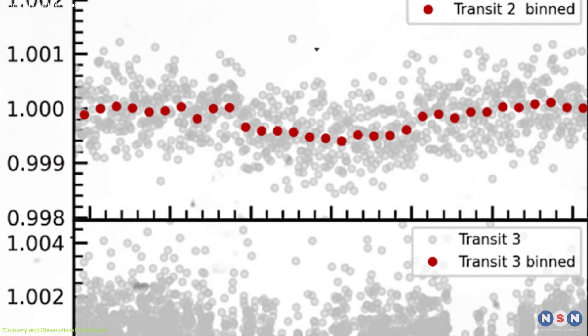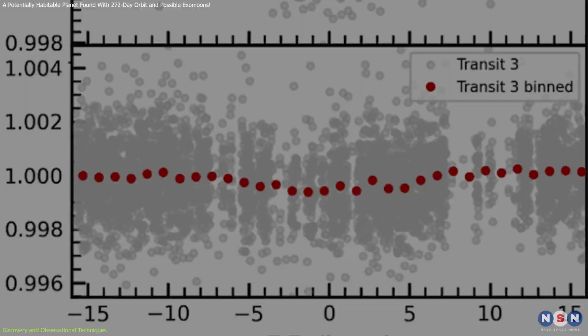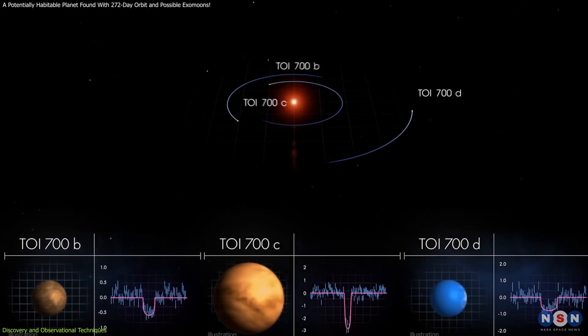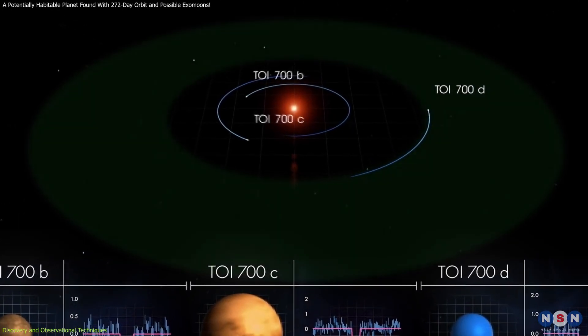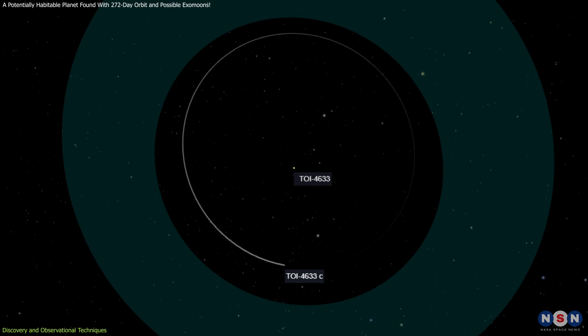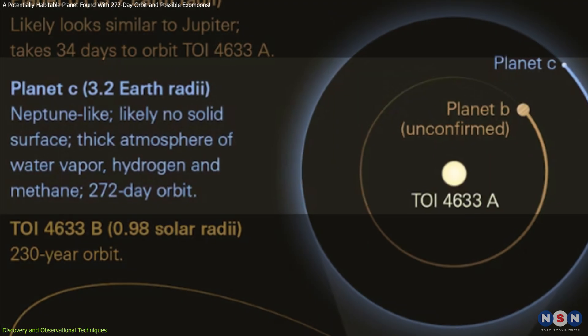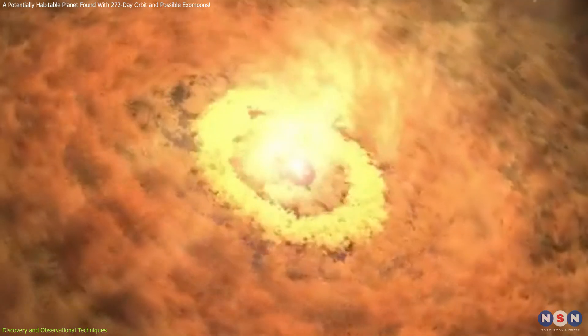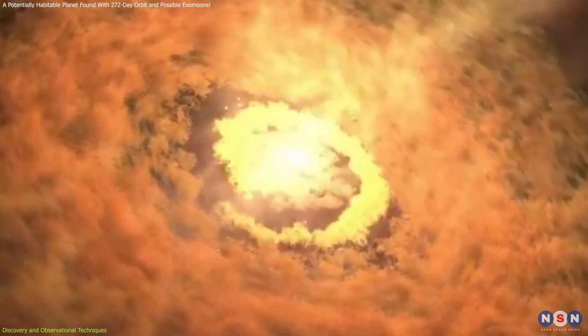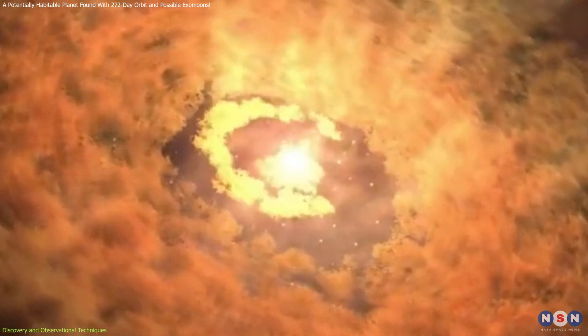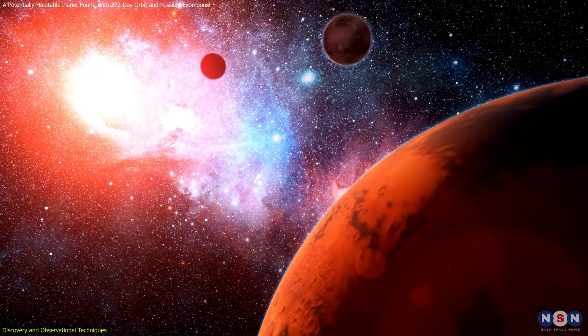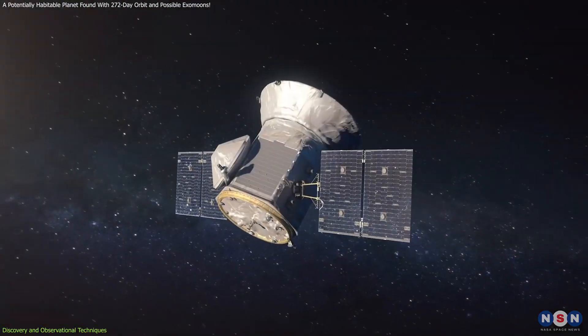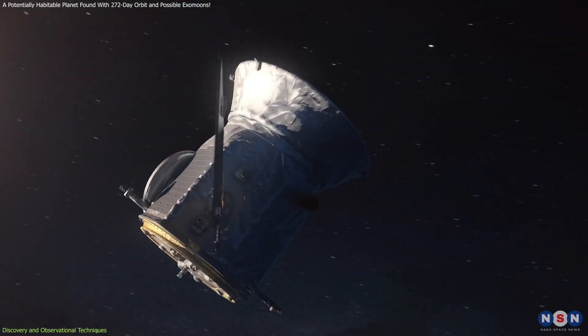The human brain's ability to recognize patterns and filter out noise proved invaluable in spotting this exoplanet. Most exoplanets discovered by TESS have much shorter orbits, making this planet an outlier. The fact that this exoplanet takes 272 days to complete one orbit challenges our understanding of how planets form and remain stable in such environments. It suggests that there may be more long-period planets waiting to be discovered, hidden in the vast datasets collected by TESS.